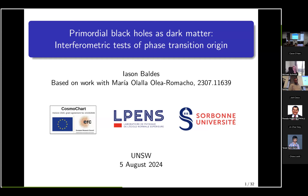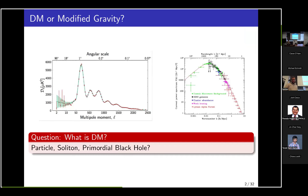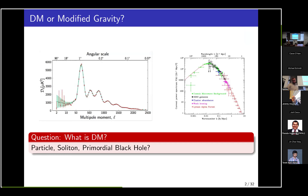Thanks Michel and thanks for letting me present these results here. This is work I did with Maria Olaya and it's really motivated by the missing mass problem. A priori you might wonder whether the solution is additional matter content or some modified gravity, but it seems that adding additional matter content is easier in terms of an overall coherent picture, explaining not only galaxy rotation curves but also velocities of galaxies and clusters, CMB, and the matter power spectrum.